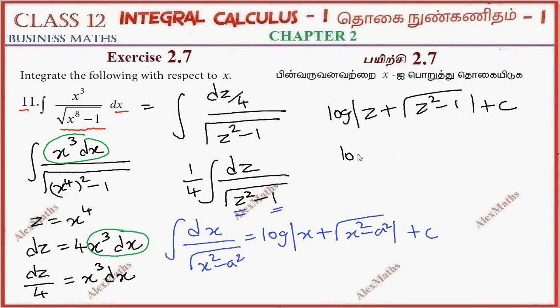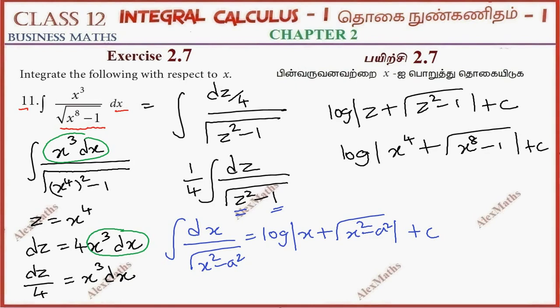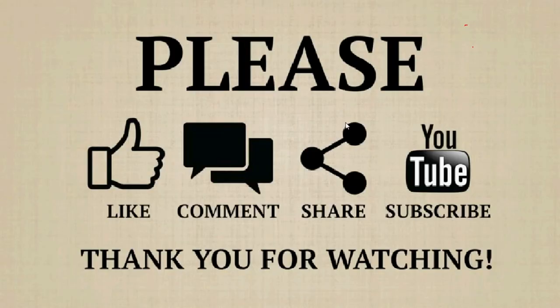Now replacing z with x⁴, the final answer is (1/4) log|x⁴ + √((x⁴)² - 1)| + C, which simplifies to (1/4) log|x⁴ + √(x⁸ - 1)| + C. I'll see you next time.